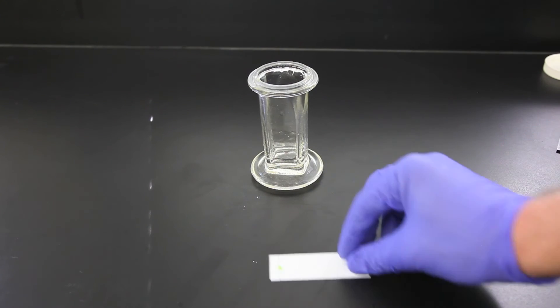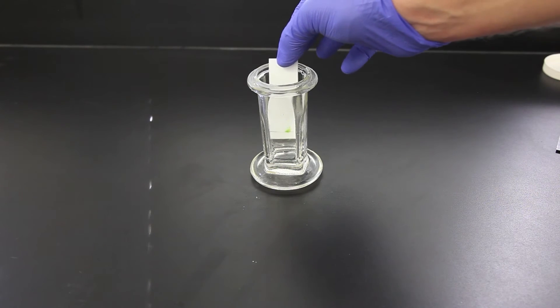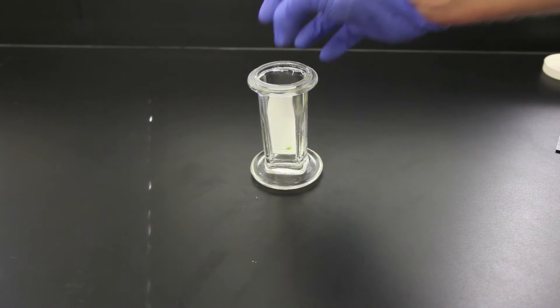Place the silica gel strip into the jar so the pigment spot is just above the solvent level. Close the lid and observe.